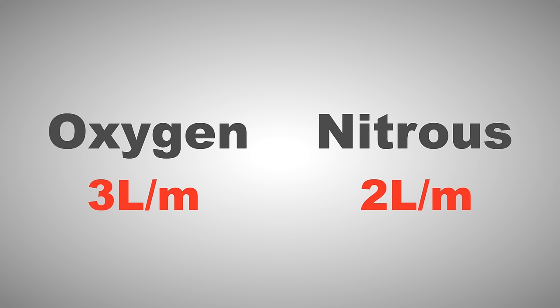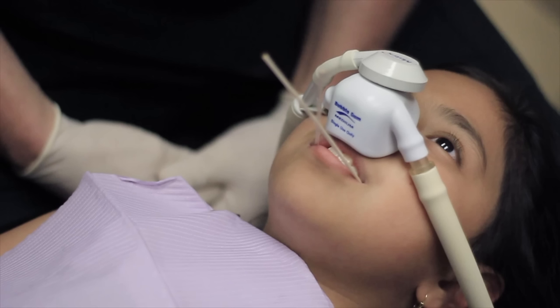At this time, increase the nitrous oxide flow rate from 3 liters per minute of oxygen and 2 liters per minute of nitrous up to 3 liters per minute of nitrous oxide and 2 liters per minute of oxygen. This bolus dose will help the child reach that blitzed state.